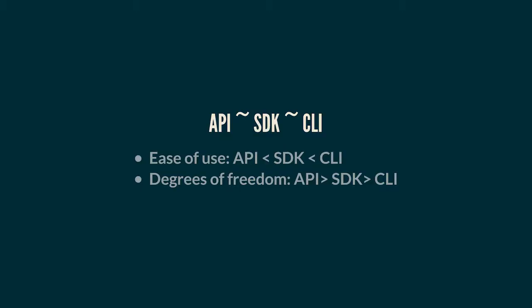Here we have an eye-level overview of the differences between API, SDK, and CLI. For ease of use: CLI is easiest, then SDK, then raw API. The degrees of freedom are the opposite: the API gives you all the freedom you want, but it comes at a cost. The SDK is something someone has already worked on and glued together for you — that's going to be straightforward. The CLI is just specific commands you want.